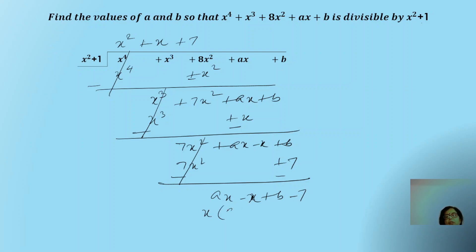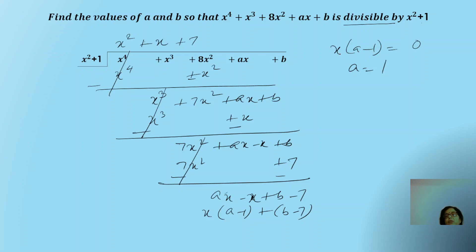From the remaining terms, we factor x: we get x(a − 1) + (b − 7). Since the polynomial is exactly divisible by x² + 1, the remainder must equal zero. So x(a − 1) = 0, which means a − 1 = 0, therefore a = 1. Similarly, b − 7 = 0, therefore b = 7. So the values a = 1 and b = 7 ensure that this polynomial is completely divisible by x² + 1.